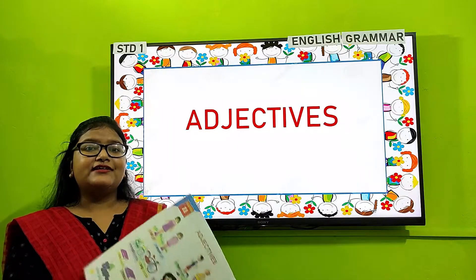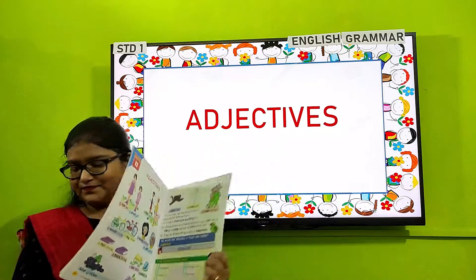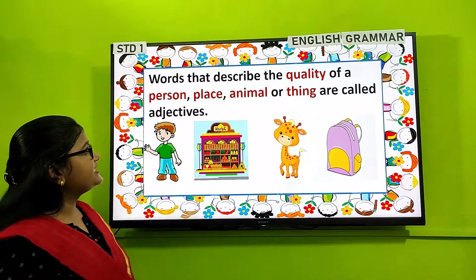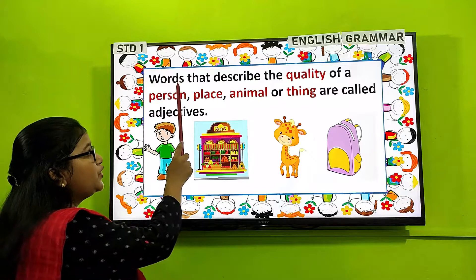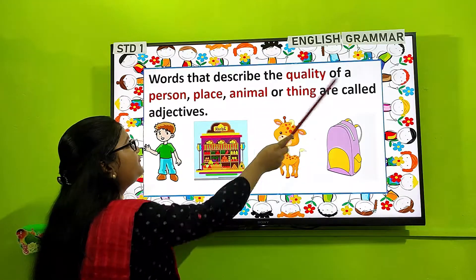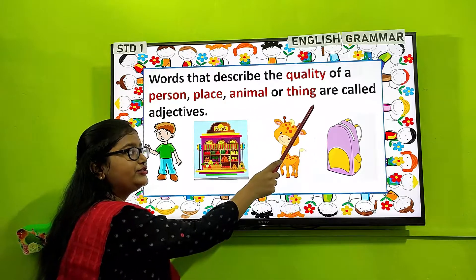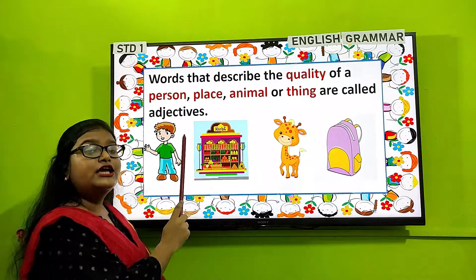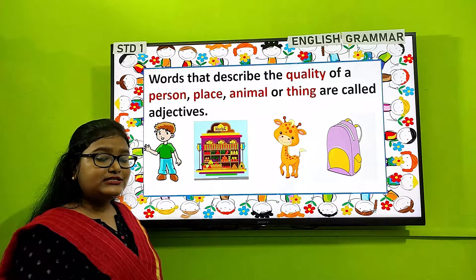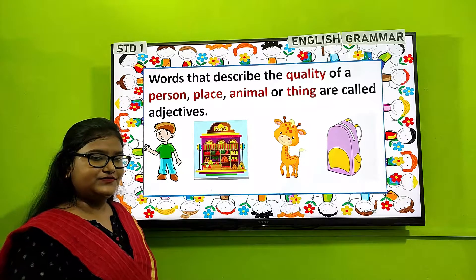We will begin Chapter 11: Adjectives. What are adjectives? Words that describe the quality of a person, place, animal, or thing are called adjectives. In short, we can also say that words that describe a noun are called adjectives.